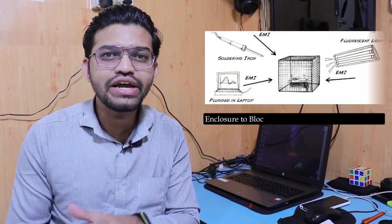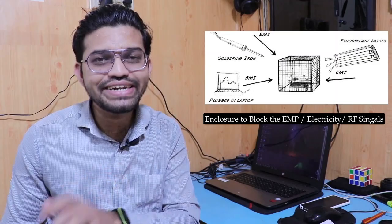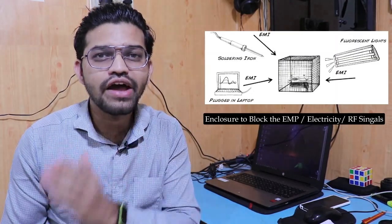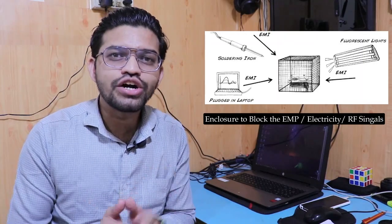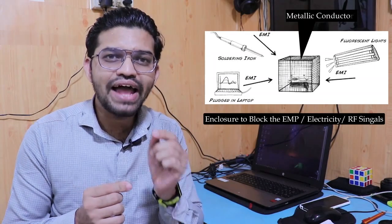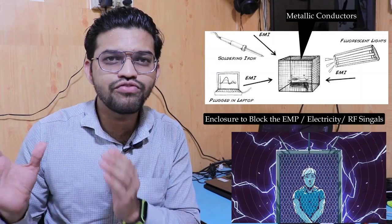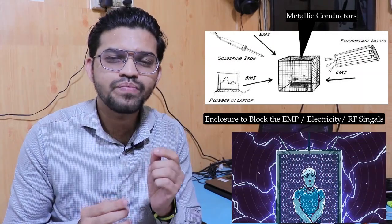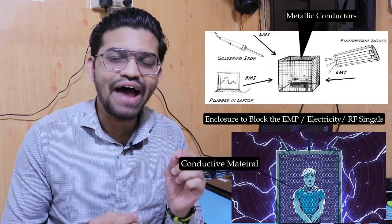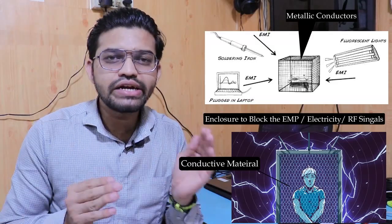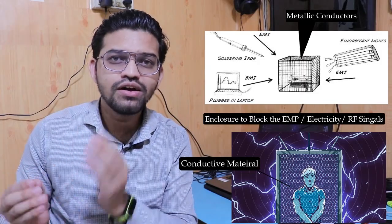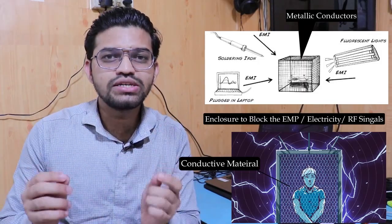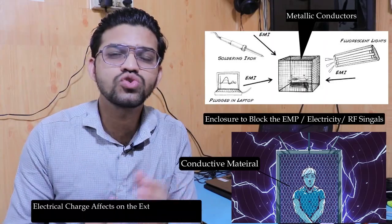So how does this Faraday cage work? This particular Faraday cage is an enclosure to block electromagnetic waves, electricity, or RF signals — radio frequency signals. It is basically an enclosure constructed using metallic frames. As you can see, this is the Faraday cage — the outer construction is made up of conducting material with small meshes on it. When we apply an electrical voltage on that particular container, the material inside gets unharmed. The electrical charge affects only the exterior side; on the interior side, there is no electric charge present.